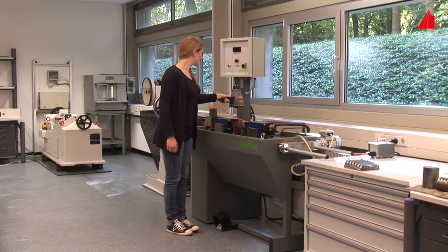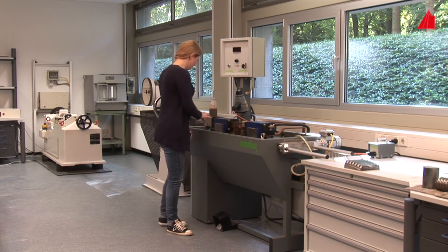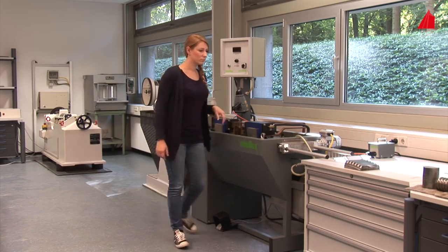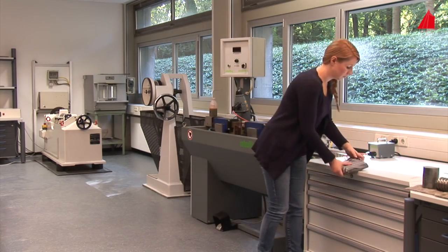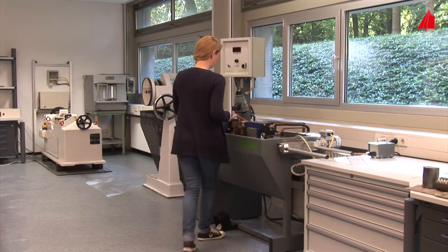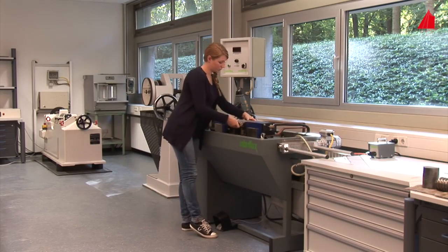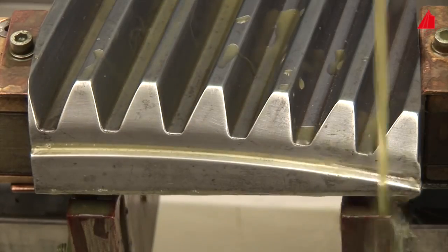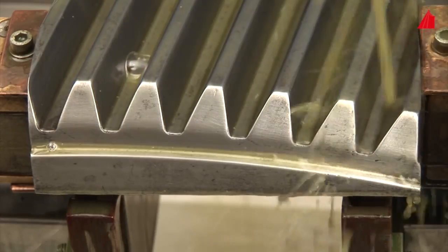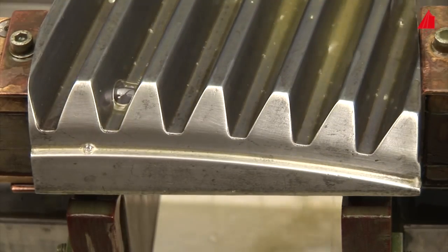Still another test piece has to face the magnetic particle inspection: a section of a large gear wheel. The same procedure again: placing the gear wheel between the magnetic pole pieces, magnetizing, and applying magnetic particle suspension.